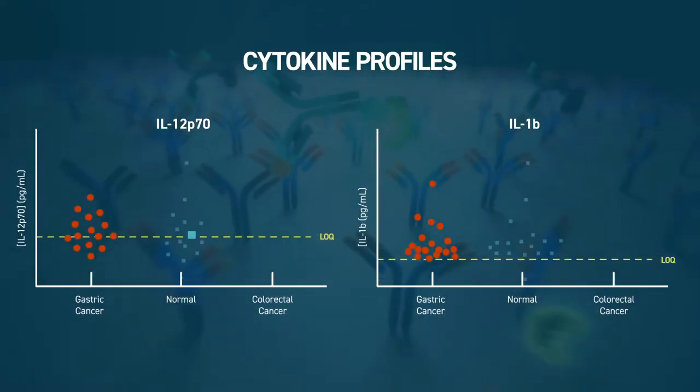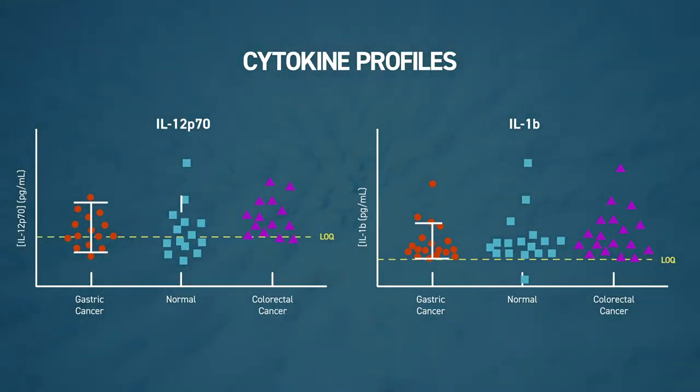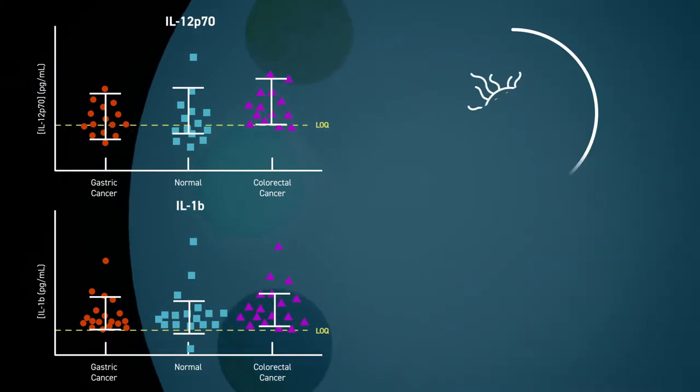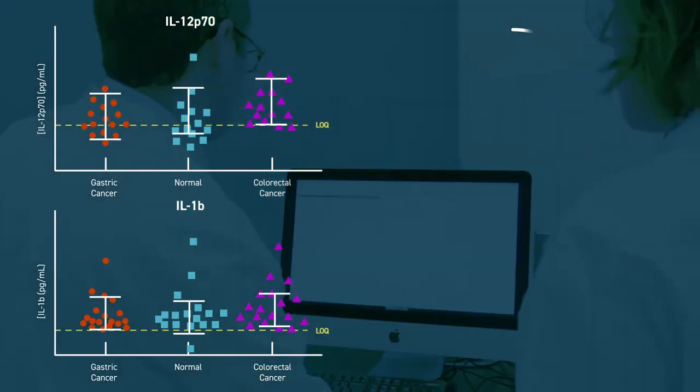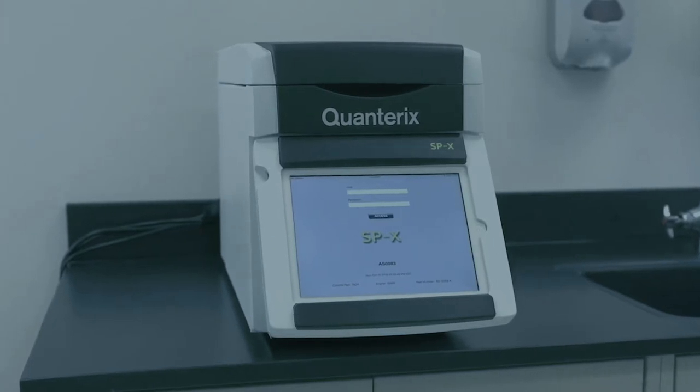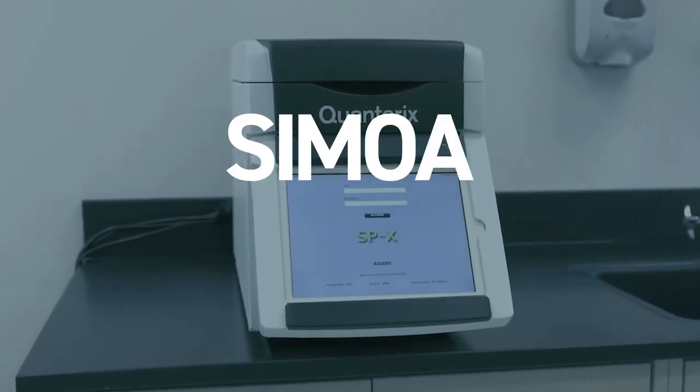Cytokine profiles are highly relevant indicators of immune status. They can be used as biomarker signatures to monitor and prognose disease progression and treatment, evaluate risk of disease severity, and predict treatment efficacy in adverse events. Quantification of healthy baselines with precision is only possible with Simoa sensitivity.